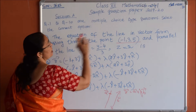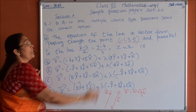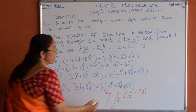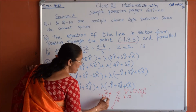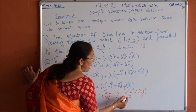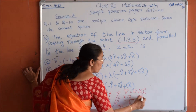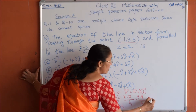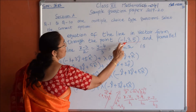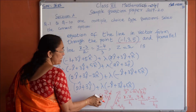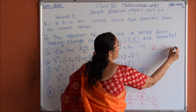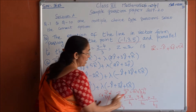The passing-through point in Cartesian 3D form has equation x minus x1 by b1 equals y minus y1 by b2 equals z minus z1 by b3. The point given is (−1, 3, 5), so A vector equals minus i plus 3j plus 5k.